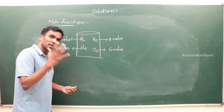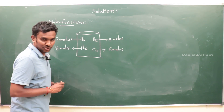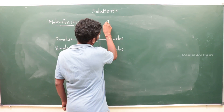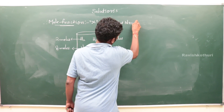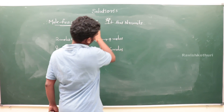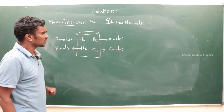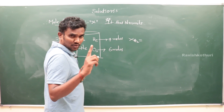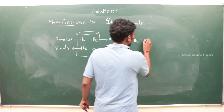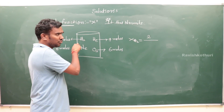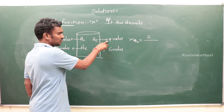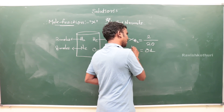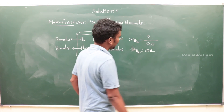Helium = 4 moles, oxygen = 6 moles, neon = 8 moles. Mole fraction is denoted by x and has no units. Mole fraction of H₂ = number of moles of H₂ divided by total moles = 2 divided by (2+4+6+8) = 2/20 = 0.1. So x(H₂) = 0.1.